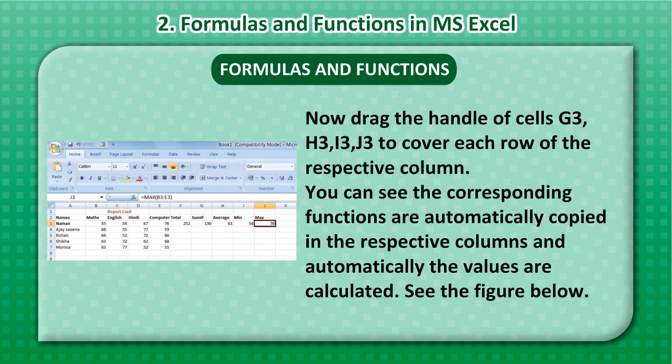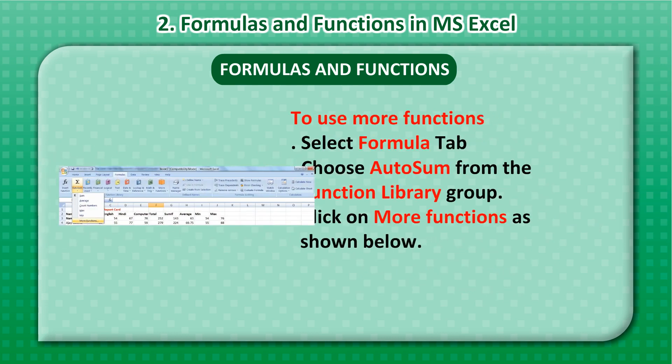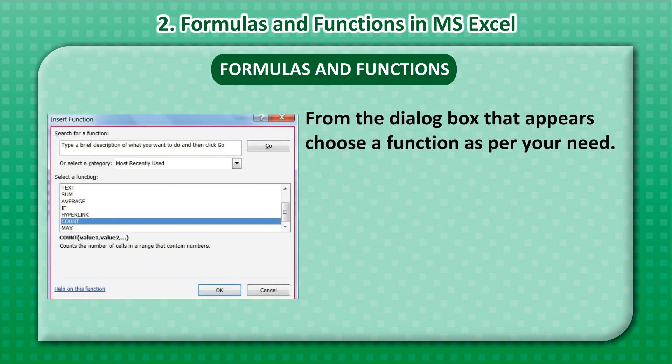You can see the corresponding functions are automatically copied in the respective columns and the values are automatically calculated. See the figure below. To use more functions, select the Formula tab and choose Autosum from the Function Library group. Click on More Functions as shown below. From the dialog box that appears, choose a function as per your need.